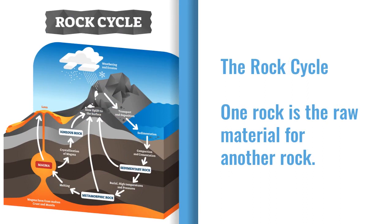In the rock cycle, one rock is literally the raw material for another rock. Metamorphic rocks form from the metamorphism of igneous, sedimentary, and metamorphic rocks.